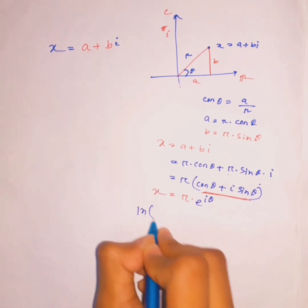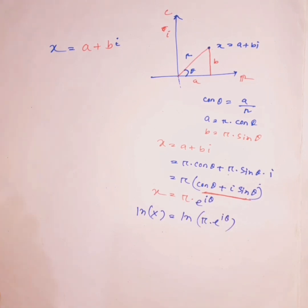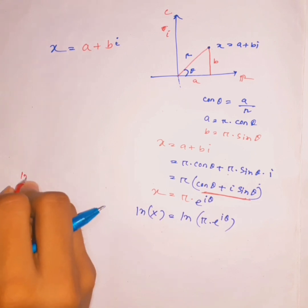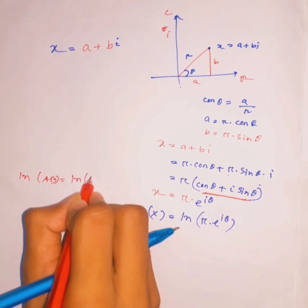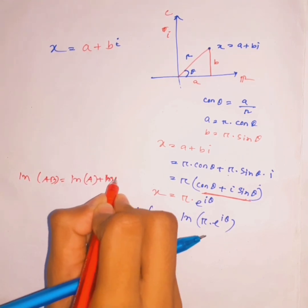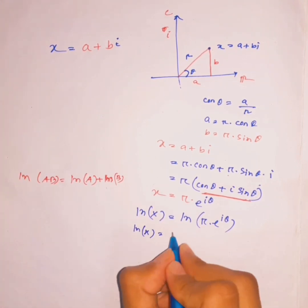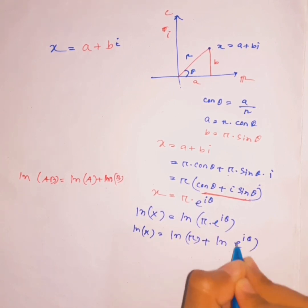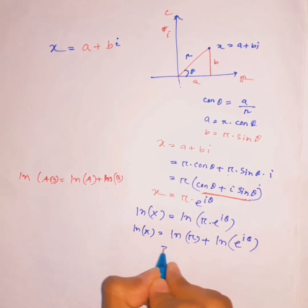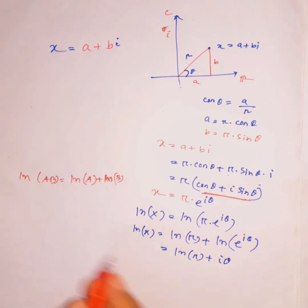Now we take the ln function of both sides. Using the property ln(ab) equals ln(a) plus ln(b), we get ln(x) equals ln(r) plus ln(e^(iθ)). Since ln and e cancel, this simplifies to ln(x) equals ln(r) plus iθ.